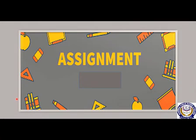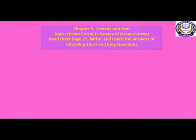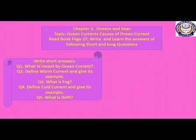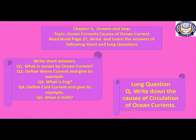Now it's time for your home assignment. You have to complete all your notebooks. Chapter Three — Oceans and Seas. Topic: Ocean Currents and Causes of Ocean Currents. Read book page 27. Write and learn the answers of the following short questions: Q1) What is meant by ocean current? Q2) Define warm current and give its example. Q3) What is fog? Q4) Define cold current and give its example. Q5) What is drift? Long question: Write down the causes of circulation of ocean current.